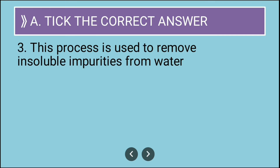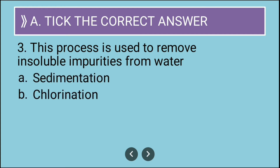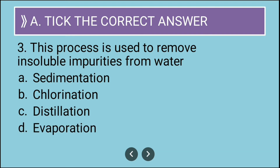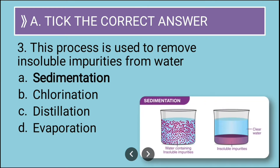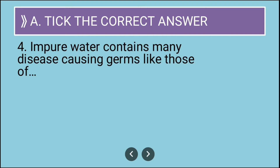The next question is: this process is used to remove insoluble impurities from water - sedimentation, chlorination, distillation, or evaporation? The correct answer is sedimentation. Sedimentation is used to remove insoluble impurities from water, like sand for example. It is the easiest way to remove insoluble impurities.